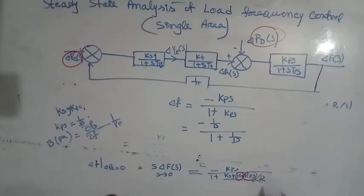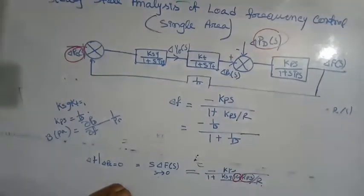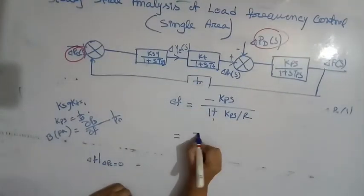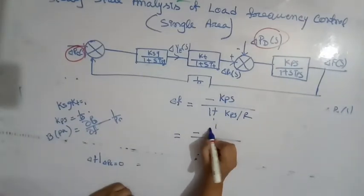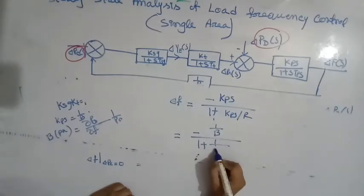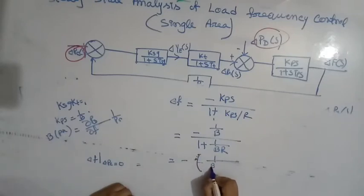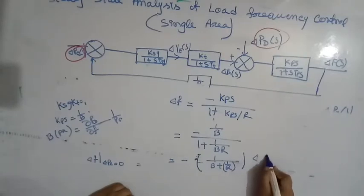So delta f for free governor operation equals minus KPS divided by (1 + KSG·KT·KPS/R). With KSG·KT = 1 and KPS = 1/B, this becomes minus (1/B) divided by (1 + 1/(B·R)), which equals minus 1/(B + 1/R) into delta PD.